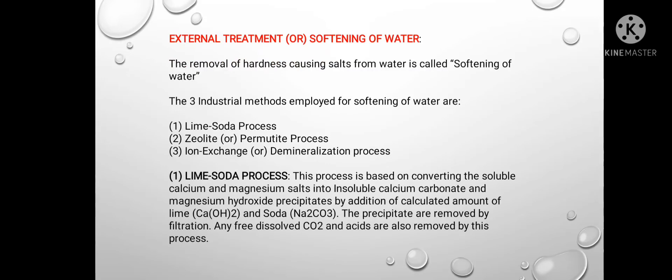Now we will see external treatment, also known as softening of water. The removal of hardness-causing salts from water is called softening of water. The three main industrial methods employed for softening of water are: lime soda process, zeolite or permutit process, and ion exchange or demineralization process. First, lime soda process — this process is based on converting soluble calcium and magnesium salts into insoluble calcium carbonate and magnesium hydroxide precipitate by addition of calculated amounts of lime and soda. The precipitates are removed by filtration. Any free dissolved CO₂ and acids are also removed.